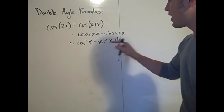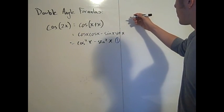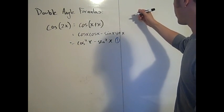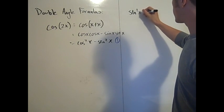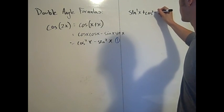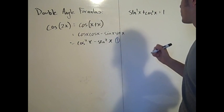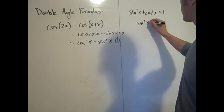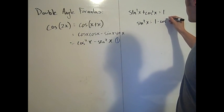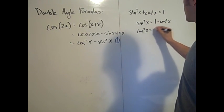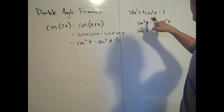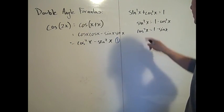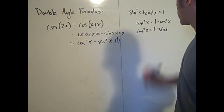Now we can use the trigonometric Pythagorean theorem, which says sine squared x plus cosine squared x equals 1. Equivalently, sine squared x equals 1 minus cosine squared x, and cosine squared x equals 1 minus sine squared x. We get each by subtracting the other term from both sides.